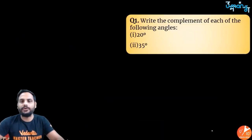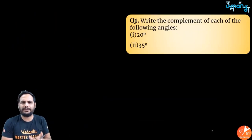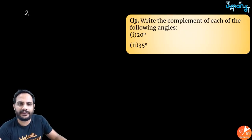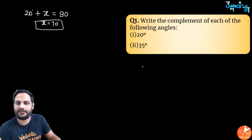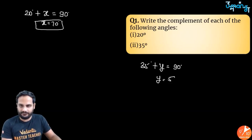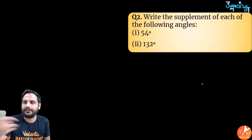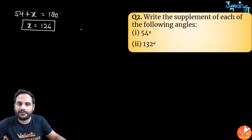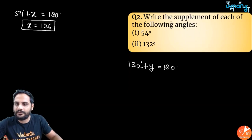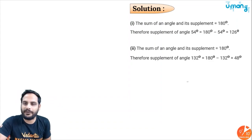Now let's solve questions. First: find the complement of each angle. For 20°: 20 + x = 90°, so x = 70°. For 35°: 35 + y = 90°, so y = 55°. For supplements: 54 + x = 180°, so x = 126°. And 132 + y = 180°, so y = 48°.